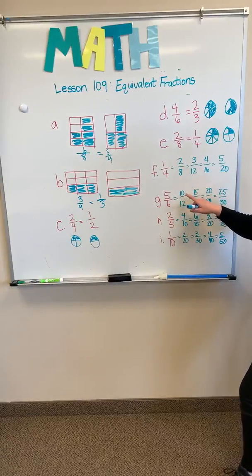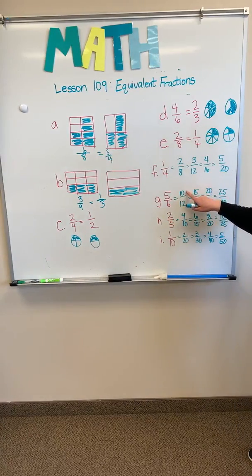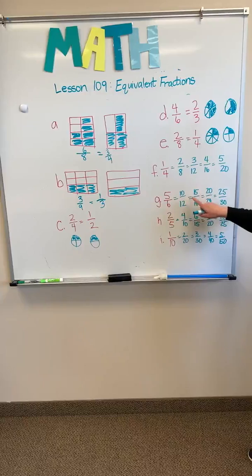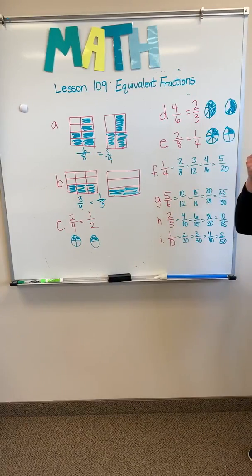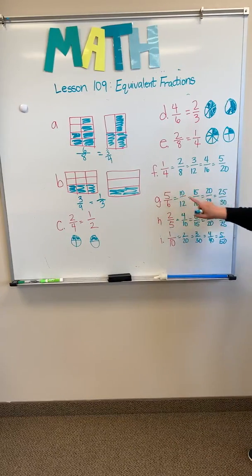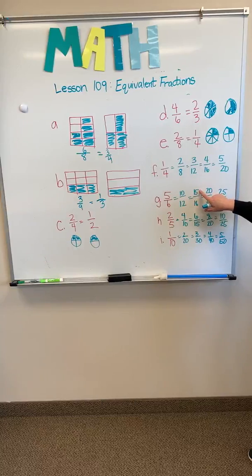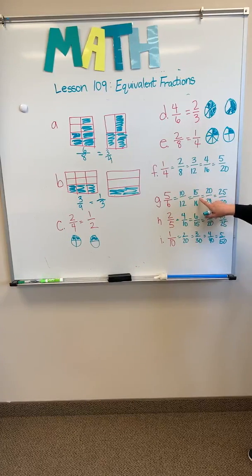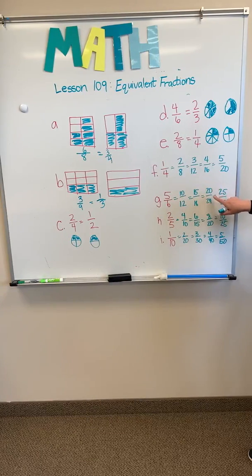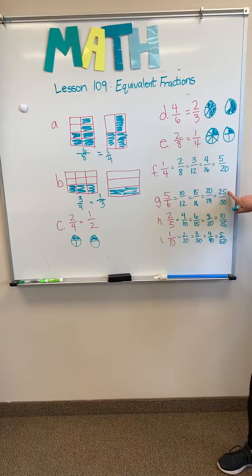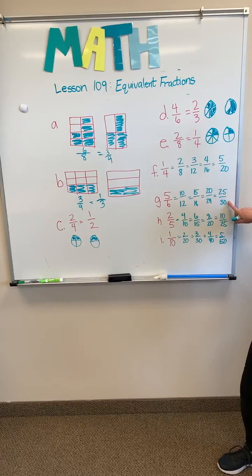We're going to multiply it by 2 over 2, which gives us 10 twelfths. And then when we multiply 5 sixths by 3 over 3, it gives us 15 eighteenths, 20 twenty-fourths, and 25 thirtieths.